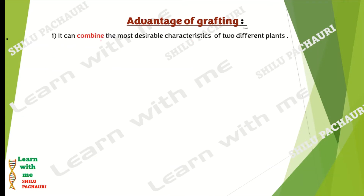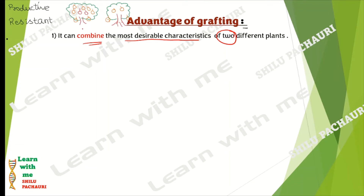The first advantage of grafting is that it can combine the most desirable characters of two different plants. For example, Plant 1 has very good productivity and fruit quality but low disease resistance — it gets infected quickly. Plant 2 has very low productivity but very good disease resistance and does not get infected easily. By grafting these two together, we can combine good productivity from Plant 1 and strong disease resistance from Plant 2.